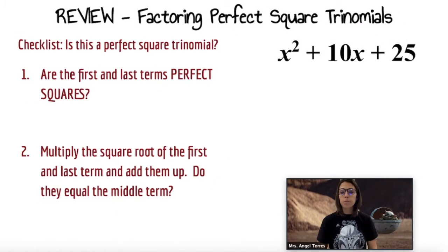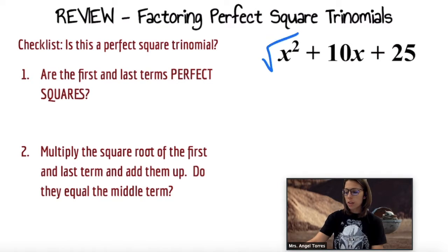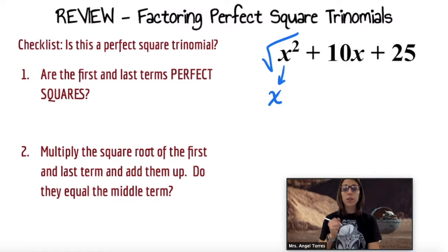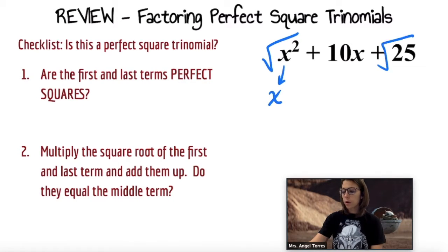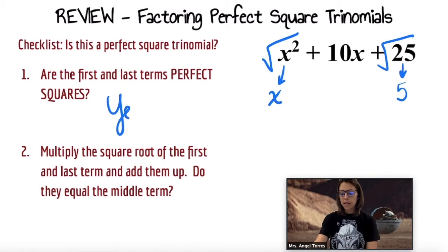Checklist item number one: are the first and the last terms perfect squares? Let's see. The square root of x squared is x, so that's a perfect square. The square root of 25 is 5, also a perfect square. So yes, and now we can go on to item number two.